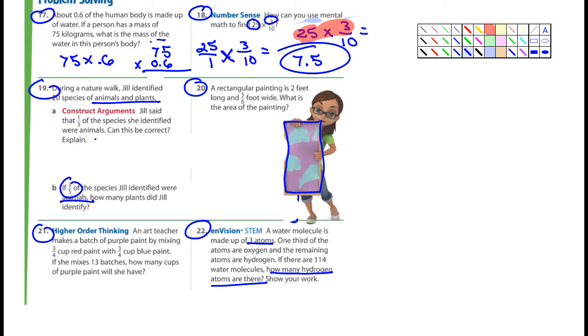Number 19. During a nature walk, Jill identified 20 species of animals and plants. Construct arguments. It says Jill said that 1/3 of the species she identified were animals. Can this be correct? Well, I'm going to answer this for you. As far as I'm concerned, I'm not quite sure what the book says, I would just say yes. She said that 1/3 of the species she identified were animals. Can this be correct? So it's going to be 20 times 1/3.